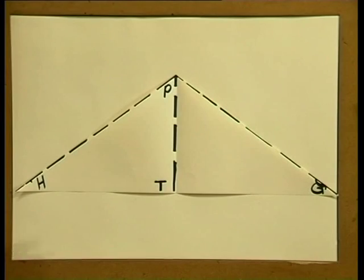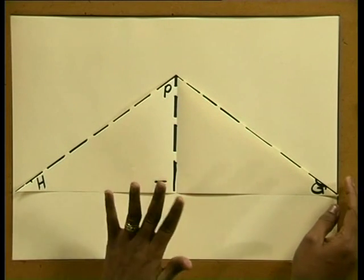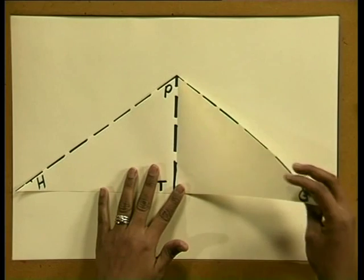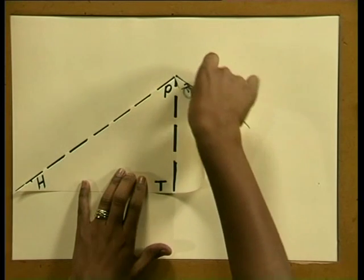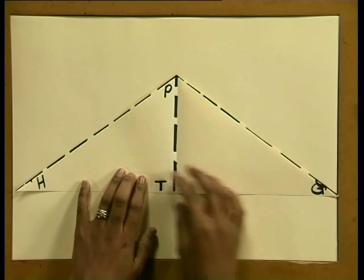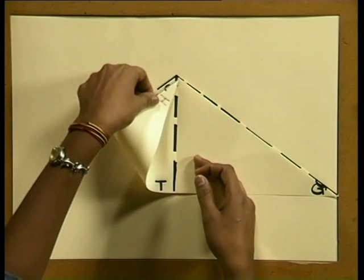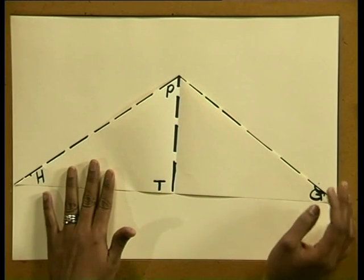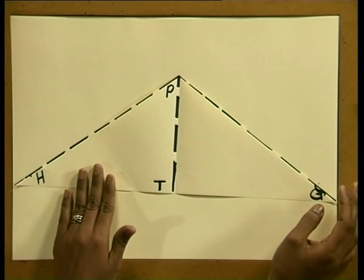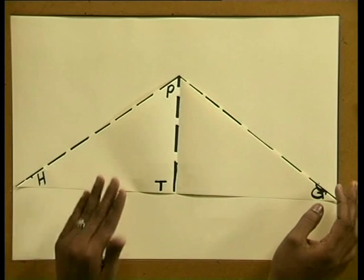When we constructed our model of the isosceles triangle, we found that it had one line of symmetry, PT. Can you predict whether an isosceles triangle has more than one line of symmetry? I have cut out our model of the isosceles triangle. If I take G and try to fold it onto P, we see that we can't get a line of symmetry. If I fold H onto P, we can't get another line of symmetry either. None of the other sides form a perfect mirror image. So there is only one line of symmetry, PT — you are absolutely correct.